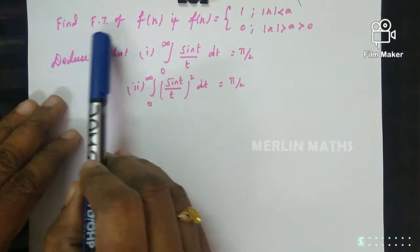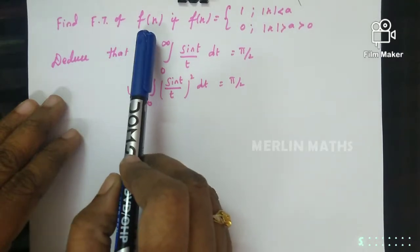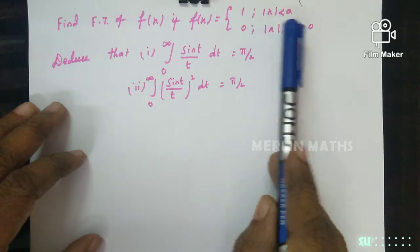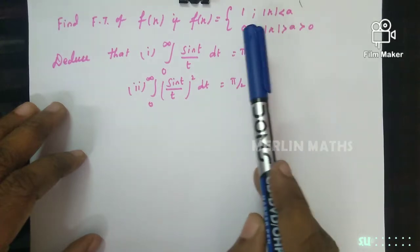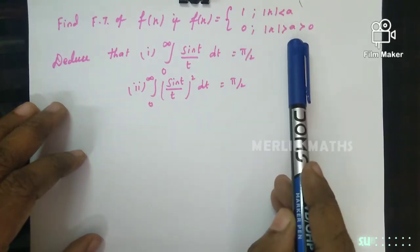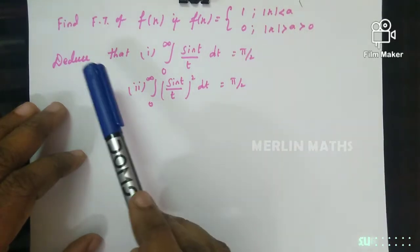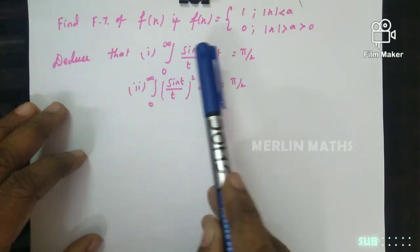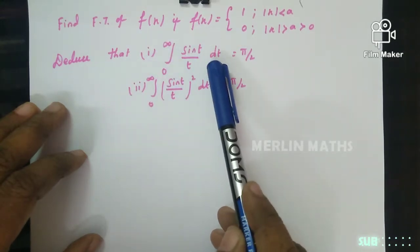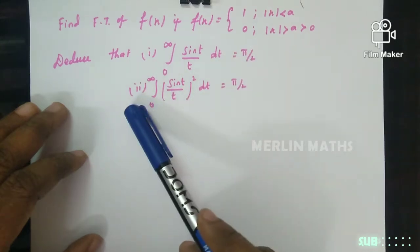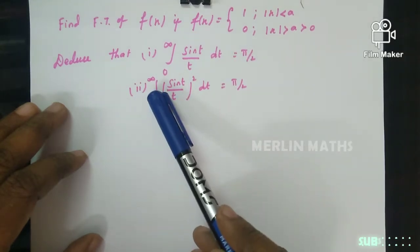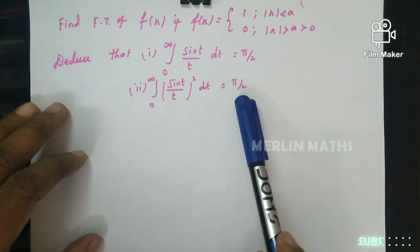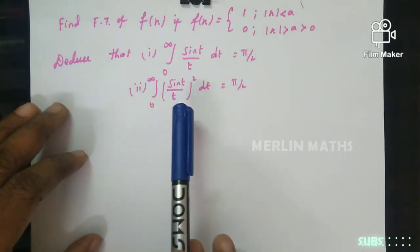Look at the question. Find the Fourier transform of f(x), where f(x) equals 1 when |x| < a, and 0 when |x| > a, with a > 0. Deduce that: first, the integral from 0 to infinity of sin(t)/t dt equals π/2, and second, the integral from 0 to infinity of (sin(t)/t)² dt equals π/2.